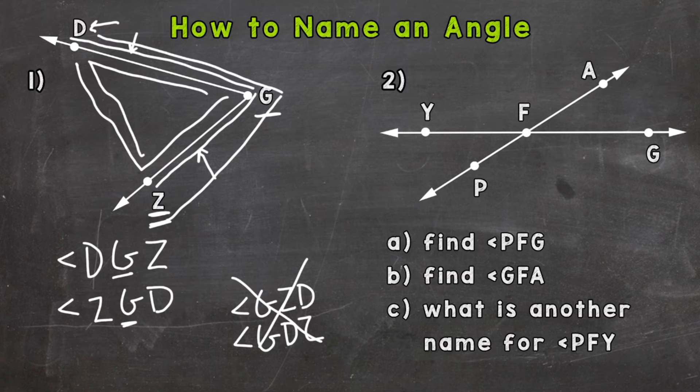So let's go to number two here. Now this looks a little different—we have two lines that intersect in order to create angles. Let's take a look at part A. We need to find angle PFG.